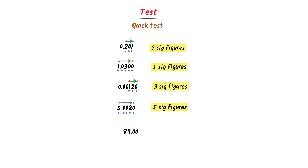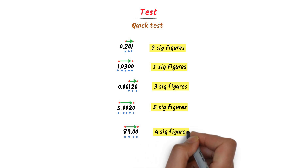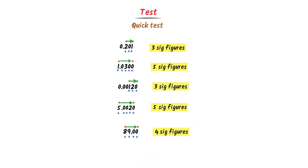In the last number, the first non-zero digit is 8. I go from 8 to the last: 1, 2, 3, 4 — there are 4 significant figures present in this number. Thus, using the second rule, we can easily find significant figures in any decimal number.